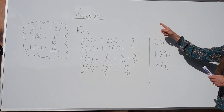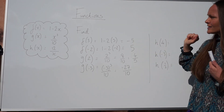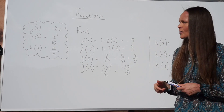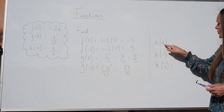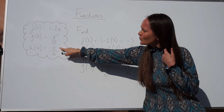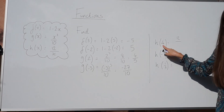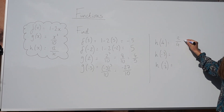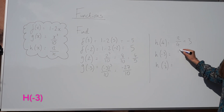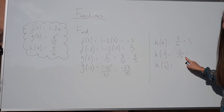Now we have to work out h of 4. The letter has changed again, so this time we're using the function h of x. You're just switching the letter x to whichever number is given in the brackets. So instead of 12 divided by x, we have 12 divided by 4, which is 3. For the next one, instead of 12 divided by x, we've got 12 divided by negative 3, and if we work that out, we get negative 4.